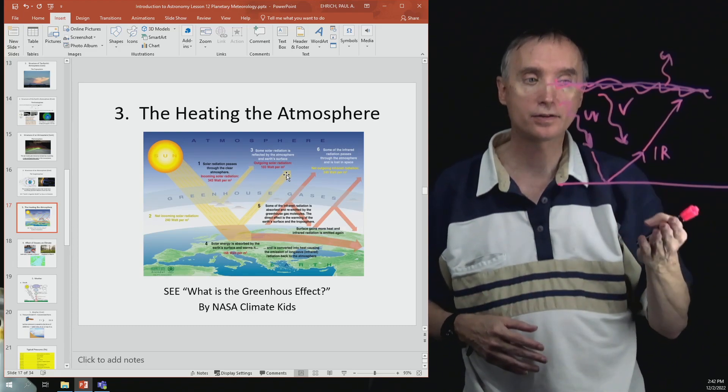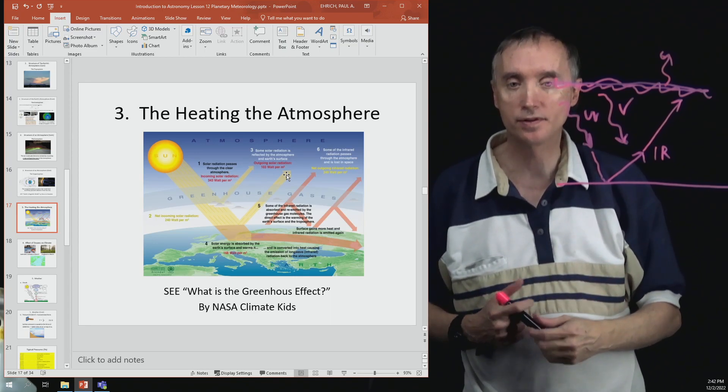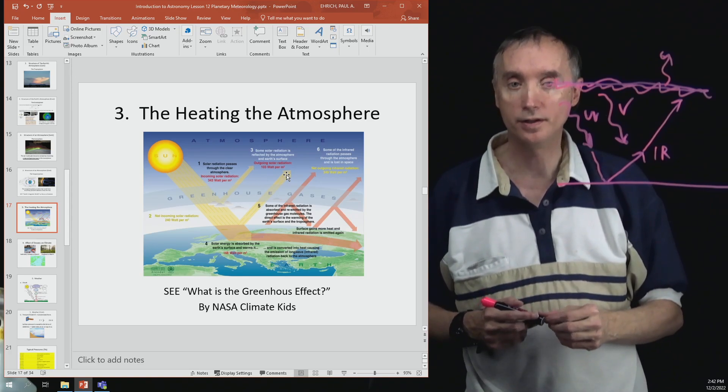Now eventually though, it gets so hot that some of that infrared does leak off into outer space. But without the effects of the greenhouse gases, the climate of the Earth would be much colder than what it is today.